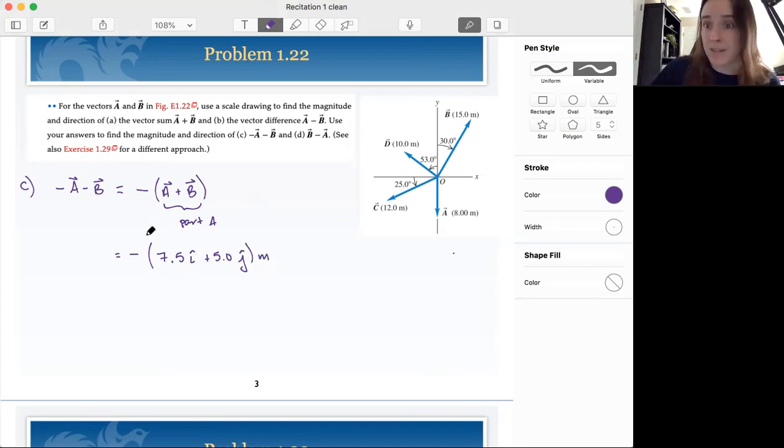It's just going to have a negative sign on the front. So it's going to be the negative of this answer that we had from part A meters.